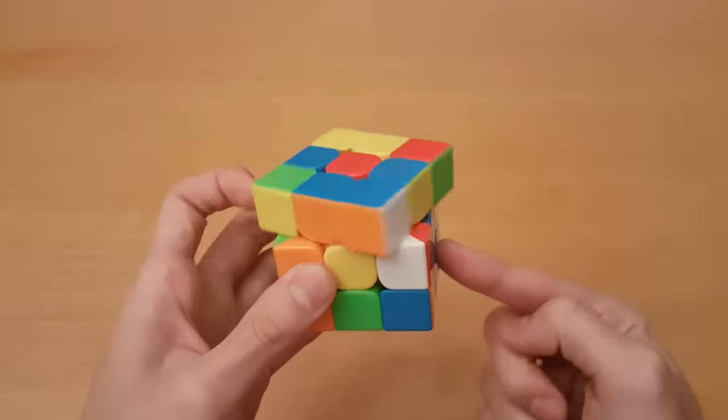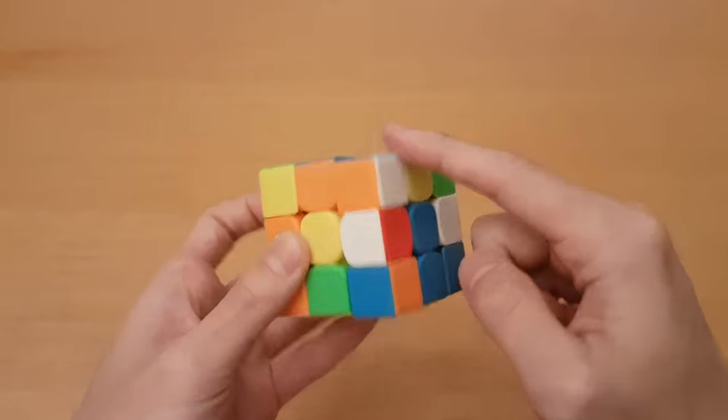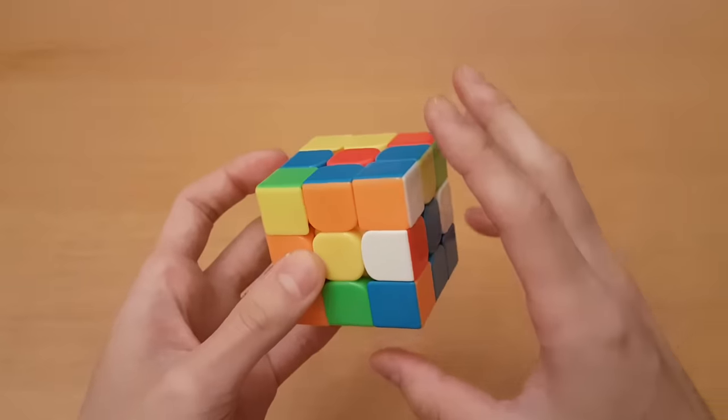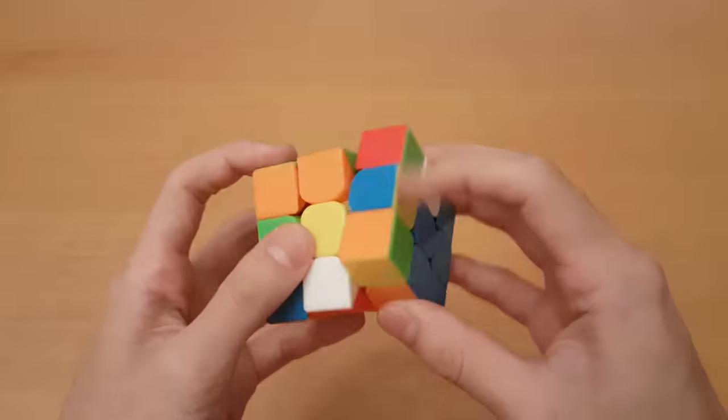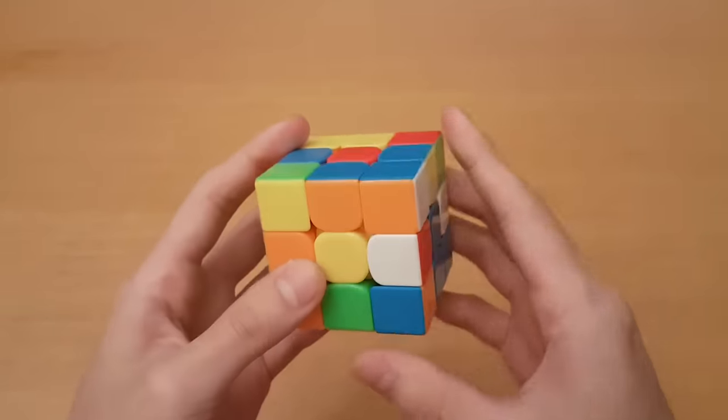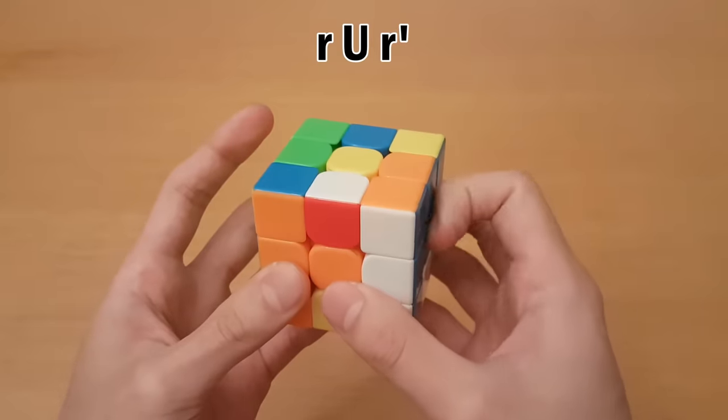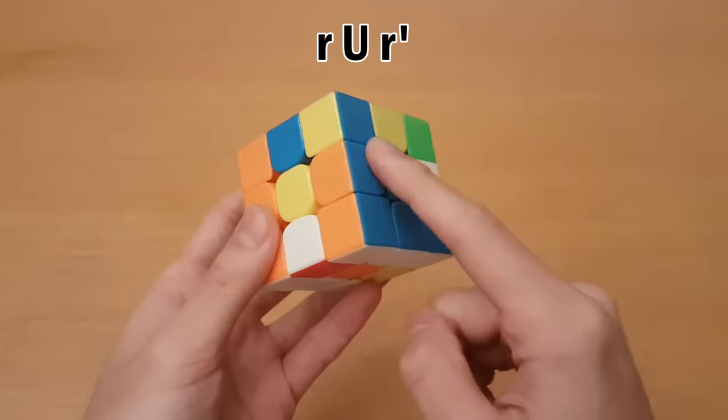So we have this edge in here and we're trying to insert this corner edge pair. So what we could do, instead of like reverse sledge or rotating, what you could just do is wide R U R' and that will insert it.